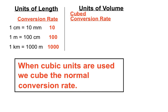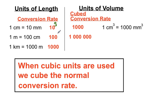The cubed conversion rate between centimeters and millimeters is 1000. So the relationship between one centimeter cubed and millimeters cubed is that 1 cm³ equals 1000 mm³. When we go between meters cubed and centimeters cubed, the conversion rate is actually a million, because we cube 100: 100 × 100 × 100 gives us six zeros. So there are a million cm³ in every m³.